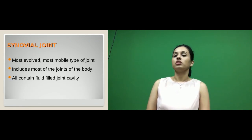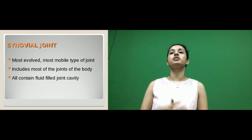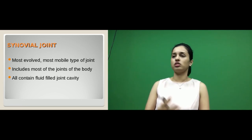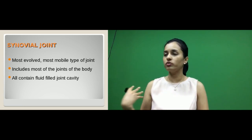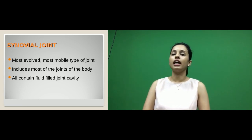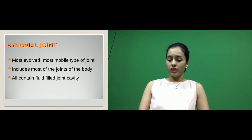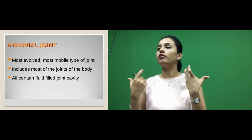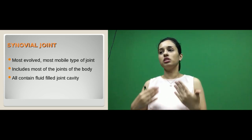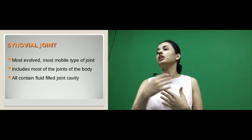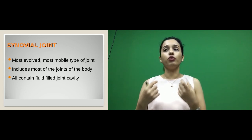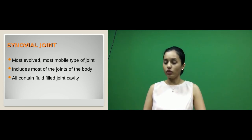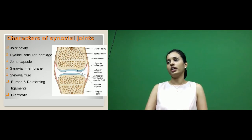Now coming to the most important joint which mainly helps in free movements: the synovial joint. These are the most evolved type, and most of the joints in the human body are synovial. They are the most mobile joints. They are called synovial joints because they have a special fluid that helps in lubrication, contained in the joint cavity. This fluid is called synovial fluid.